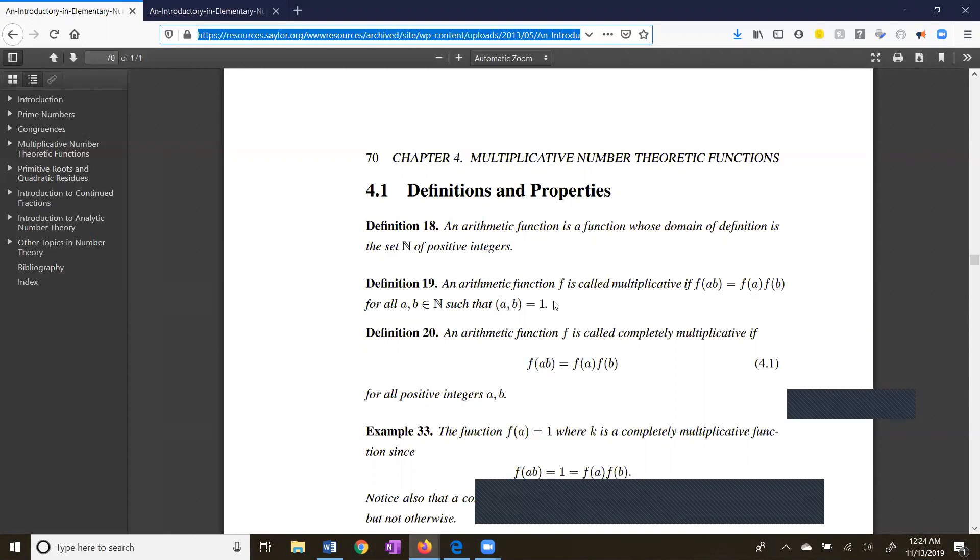An arithmetic function is completely multiplicative if we can lift the restriction that a and b are relatively prime. This is not going to be an issue for us. We're always going to have a situation where the a and b are relatively prime. And it's going to turn out that all three of our functions, sigma, tau, and phi, are all multiplicative.